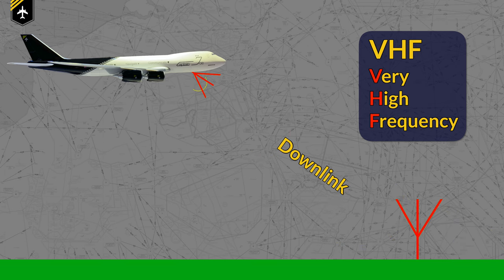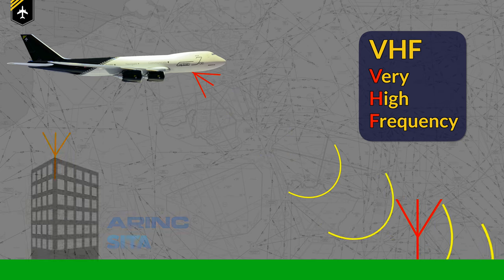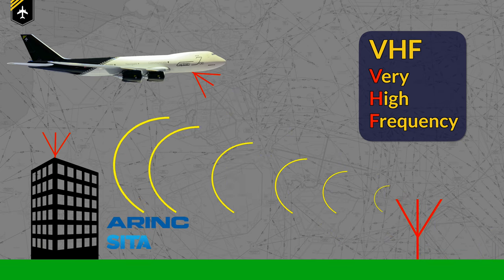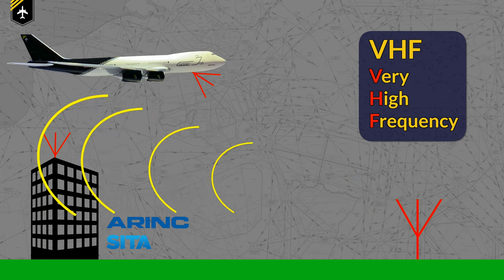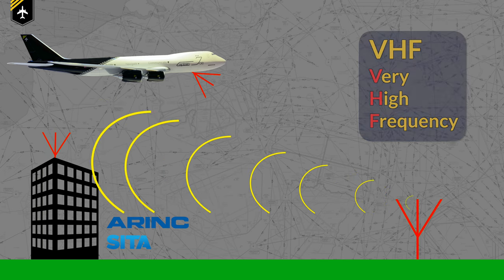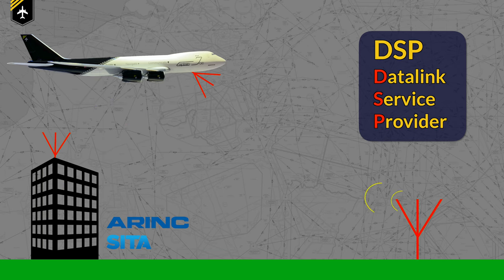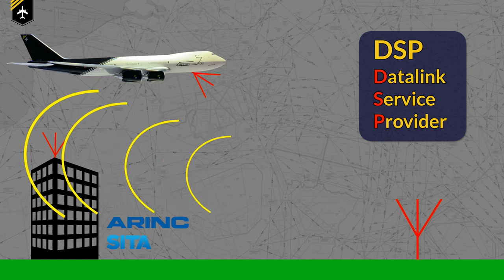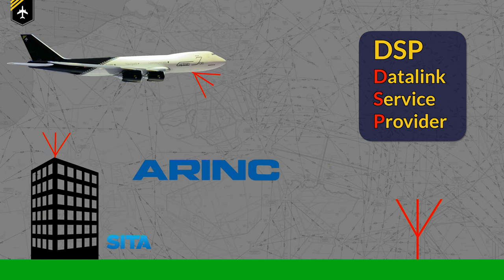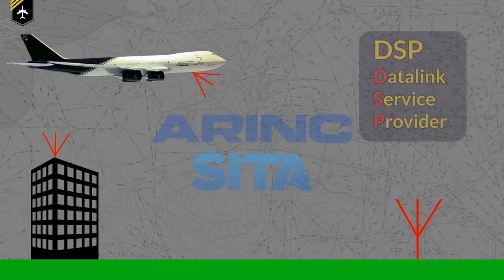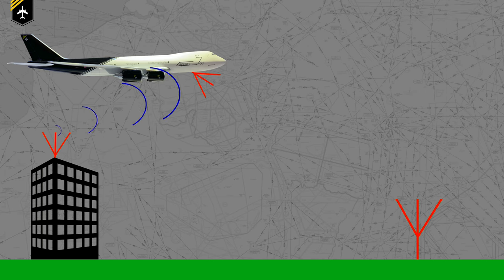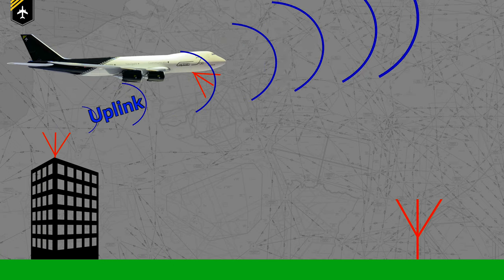From the VHF ground antenna, the signal gets broadcasted to a ground station which decodes and processes your request. The ground station — a DSP, or data link service provider, either ARINC or SITA — will then process your request, get the ATIS weather report from Riyadh, and send it as an uplink back to your aircraft.